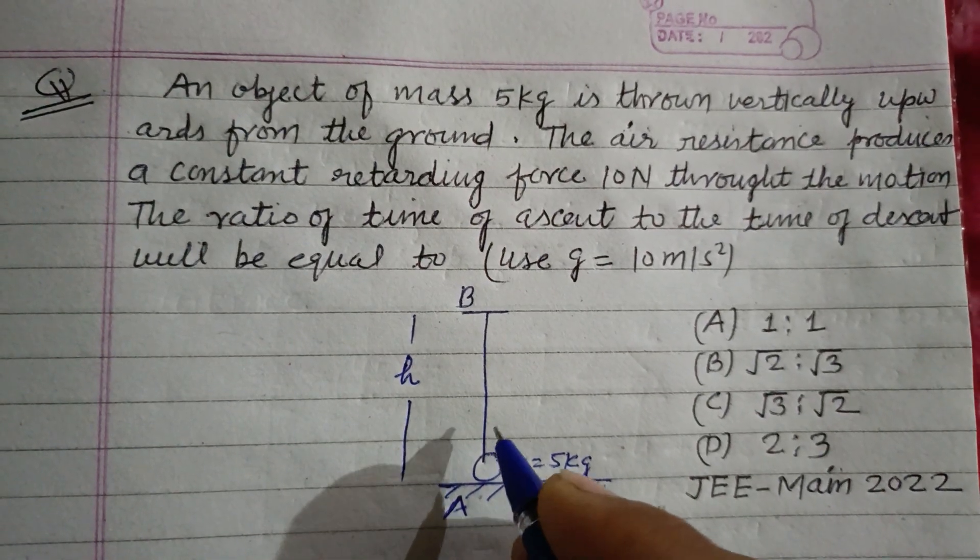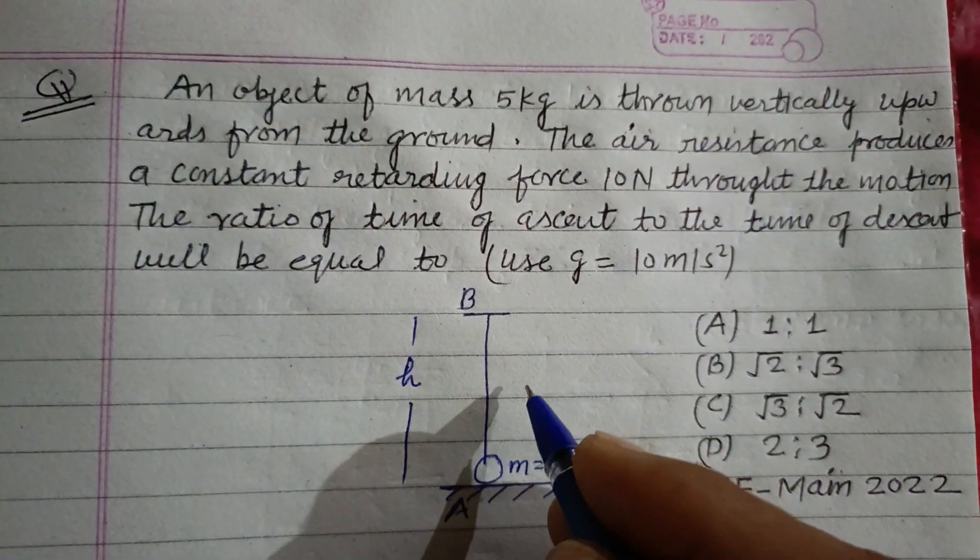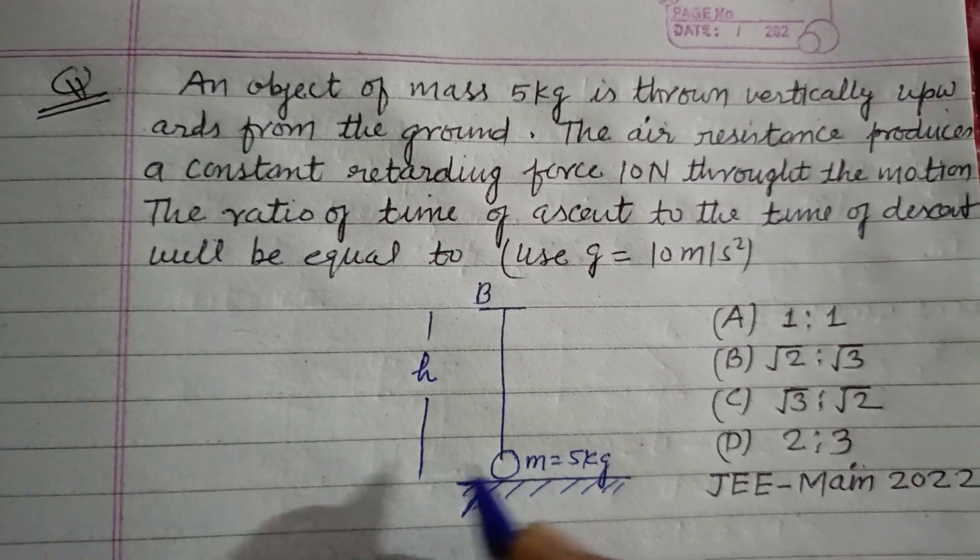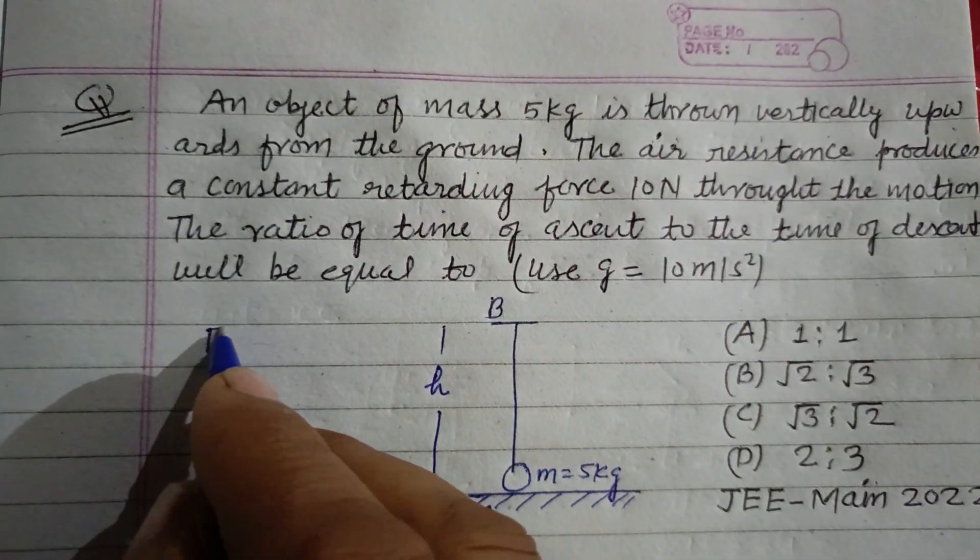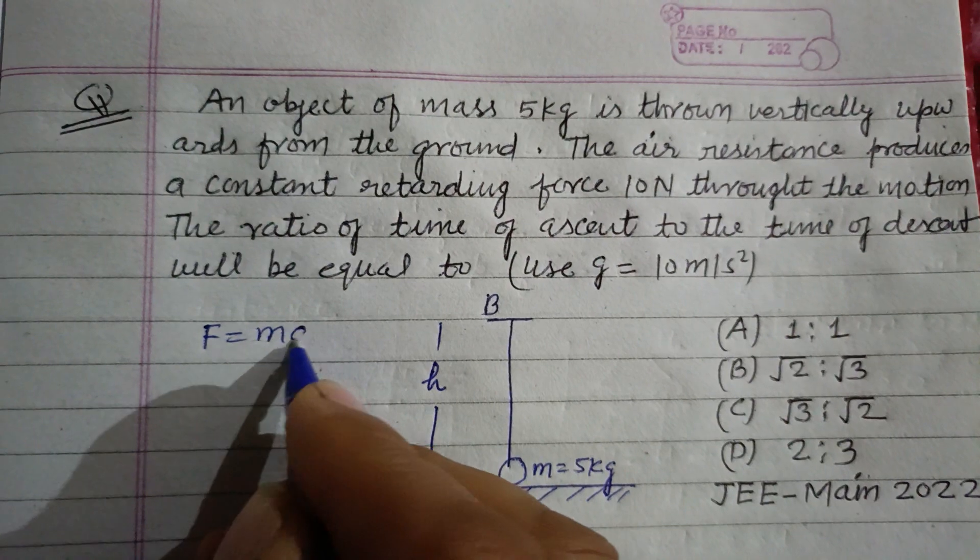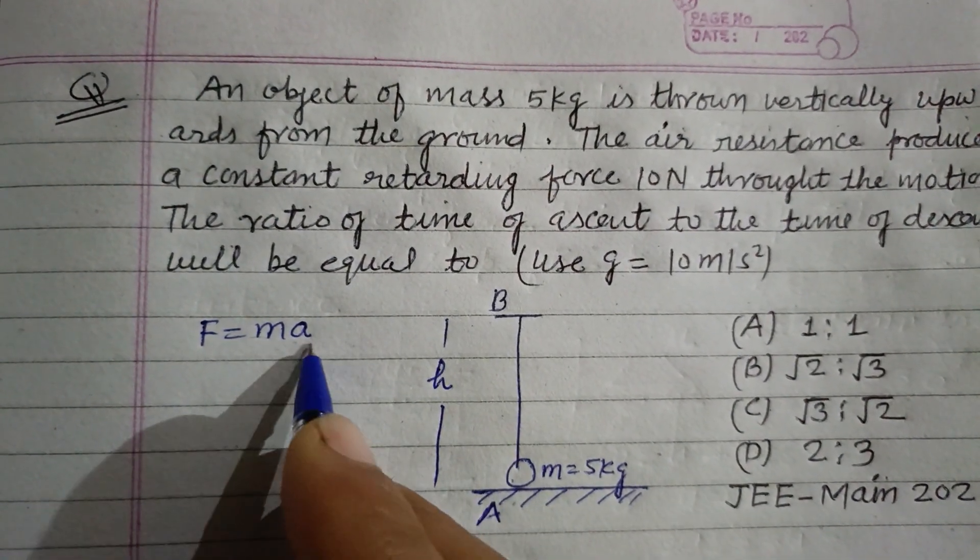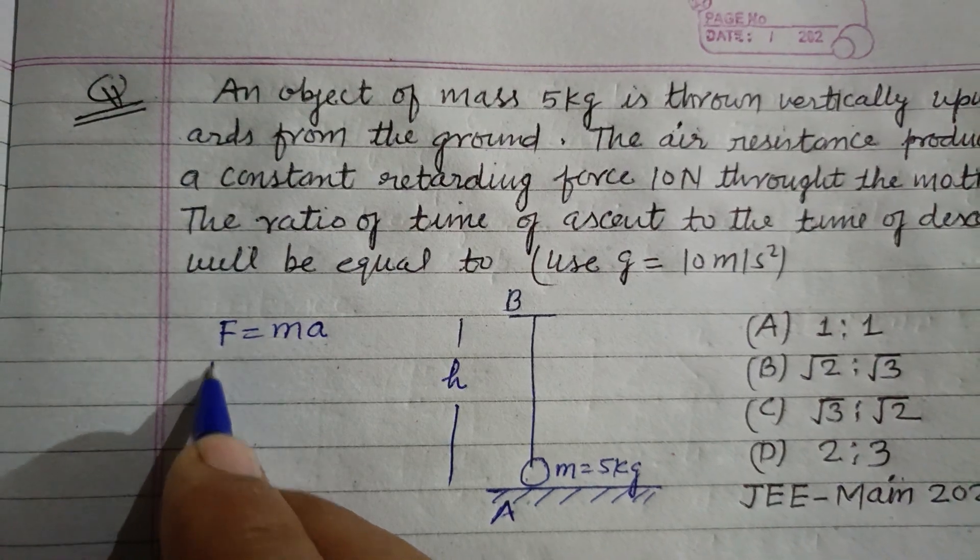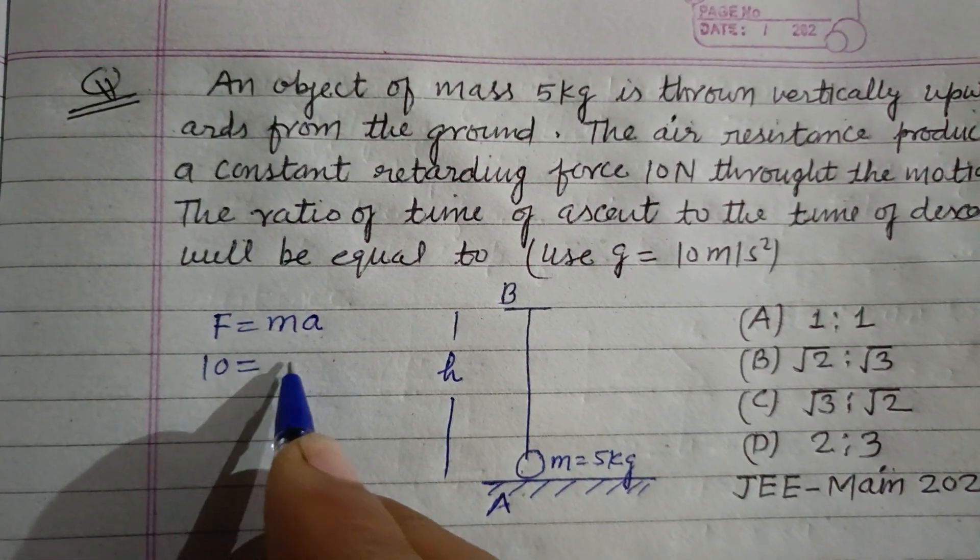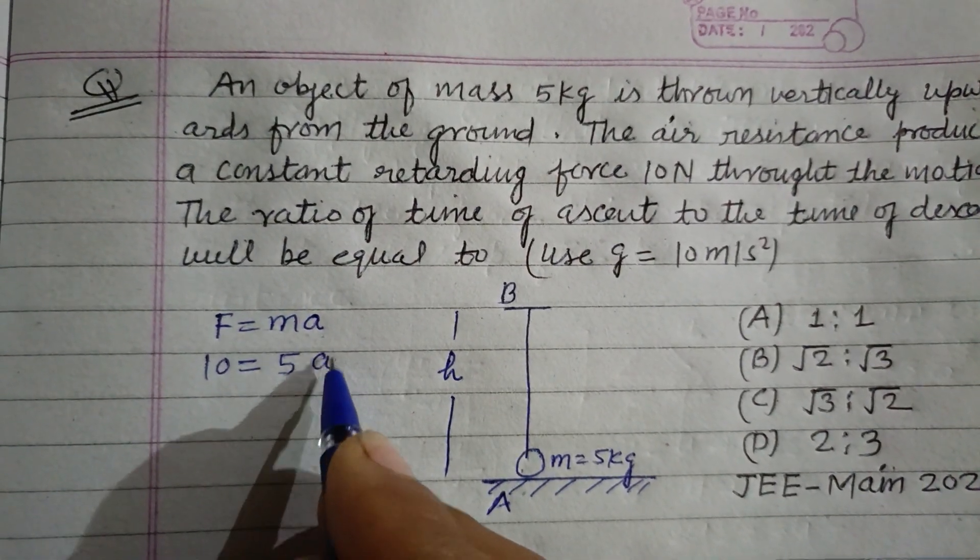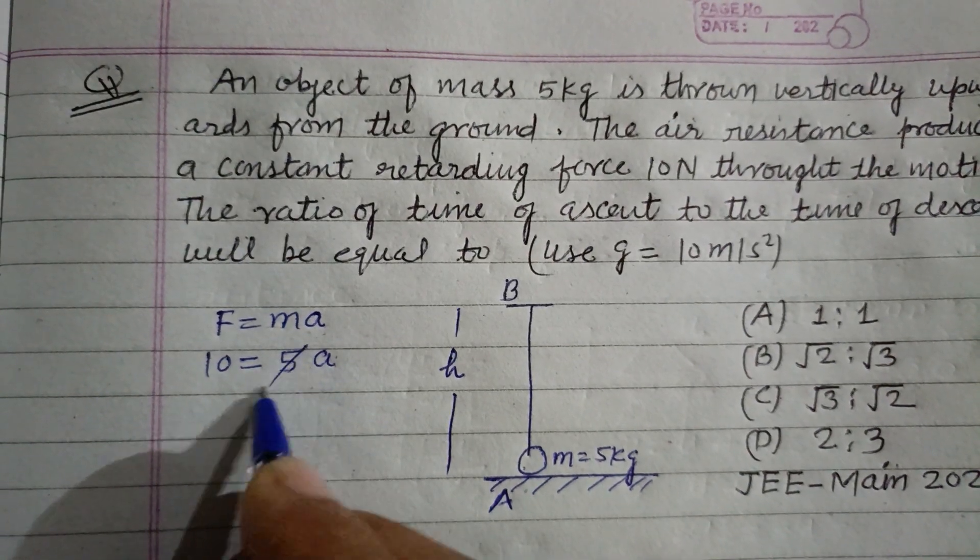And here the air resistance is also given, so air resistance F equals ma. The deceleration generated by the air resistance is a. It is given 10 Newton, mass is 5 kilogram, so a is 2 meters per second squared.